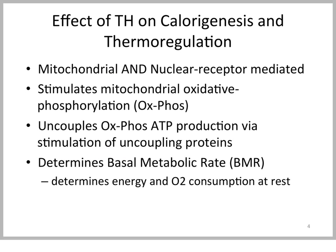What are the effects of thyroid hormone on calorigenesis and thermoregulation? There are mitochondrial and nuclear-mediated effects that lead to increased calorigenesis and thermoregulation. This stimulates mitochondrial oxidative phosphorylation and also uncoupling of that oxidative phosphorylation with uncoupling proteins, leading to wasted energy and therefore non-shivering thermogenesis. Overall, thyroid hormone status determines the basal metabolic rate — the amount of energy and oxygen consumption at rest.